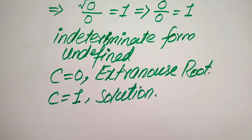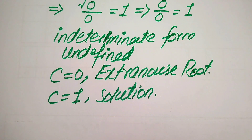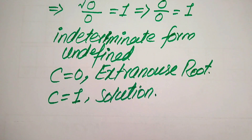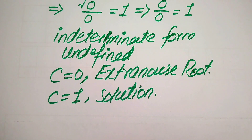To explain the term extraneous root: a root which does not satisfy the given equation is called an extraneous root, while a root which does satisfy the equation is called a solution. Our final answer is C equals 1 as the only solution. Thank you so much for watching this video, please subscribe to my channel for more exciting videos.